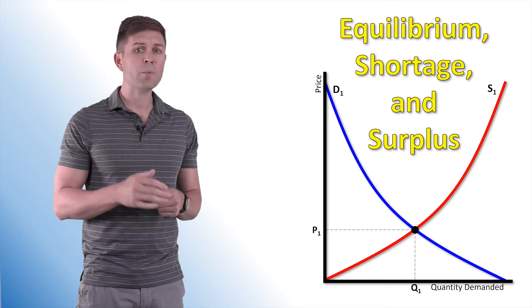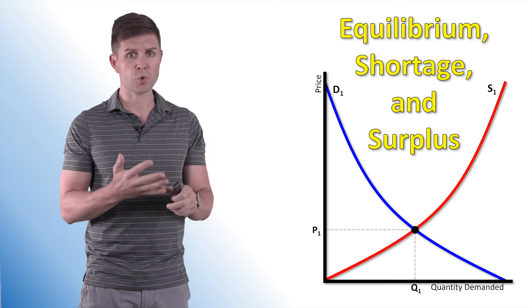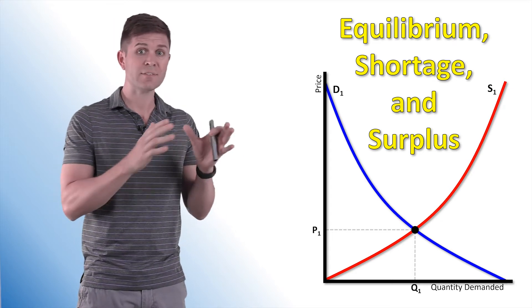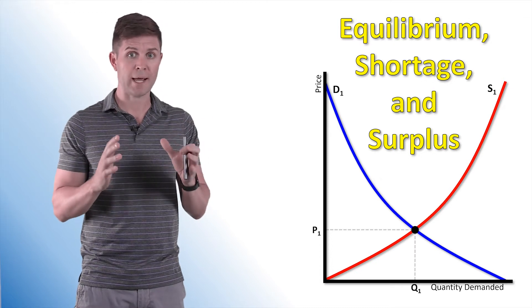Hey guys, welcome back to Egon Class. Today we are looking at the third lesson from Unit 2. This one is on equilibrium, shortages, and surpluses. We're going to be taking this stuff from demand and supply, putting them together to create the full supply and demand model.